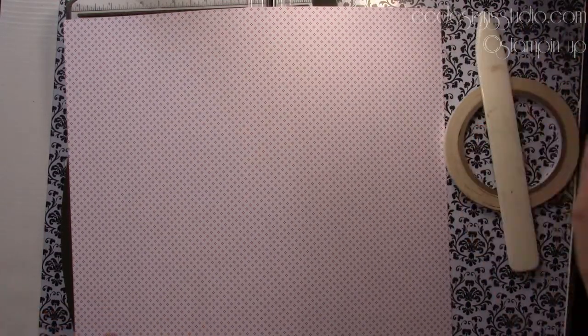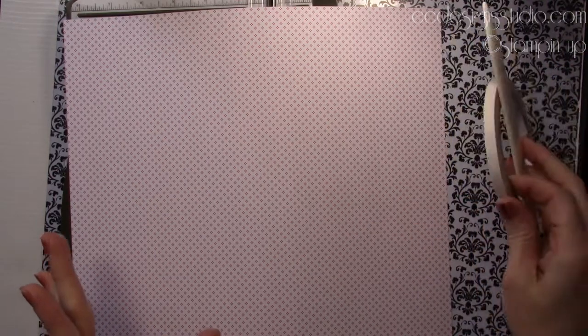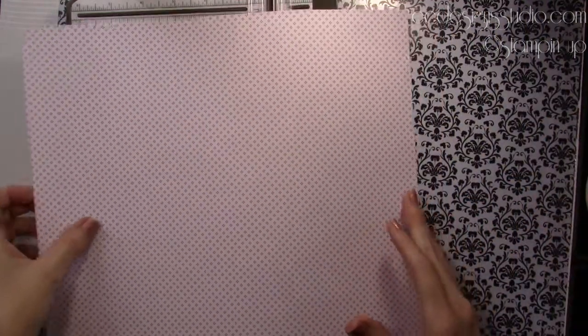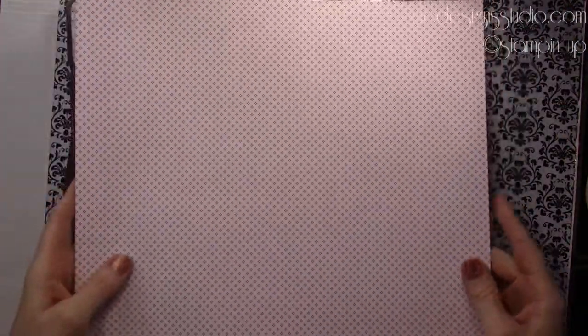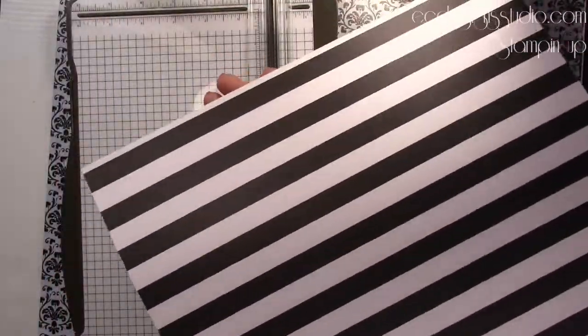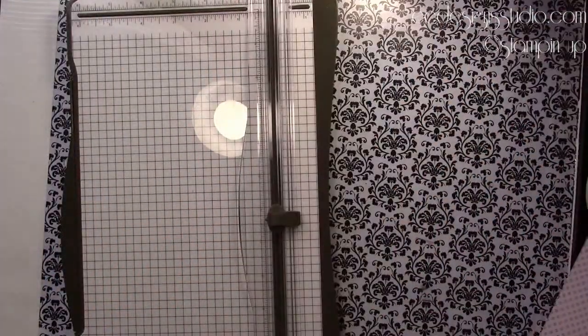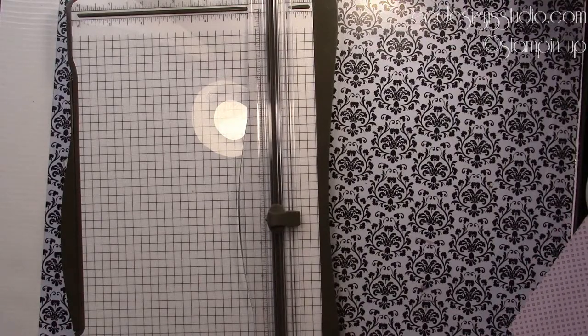Things you're going to need for this album: bone folder, tear and tape, your 12 by 12 sheet of paper. This is from Pop of Pink designer series paper. And it's really fun. It's like little melon mambo dots, and then it's just black, white, and melon mambo. It's a wonderful series. Some of it has even some gold foiling.